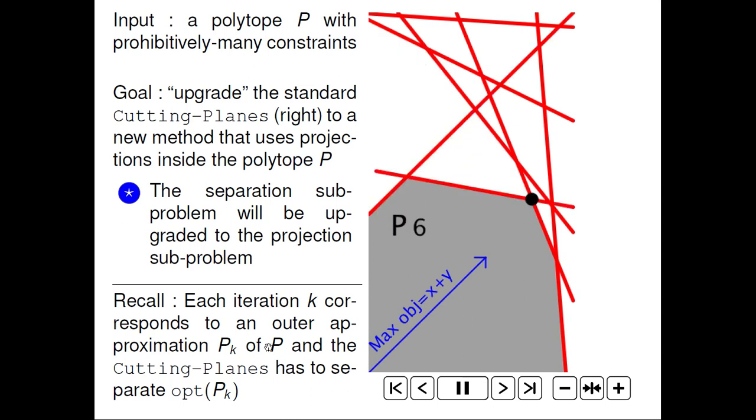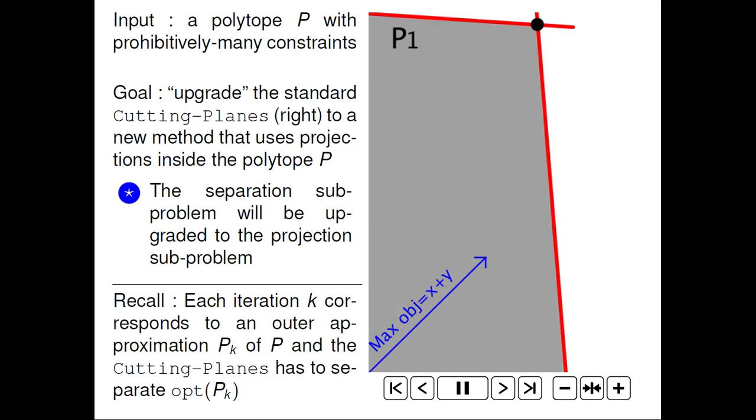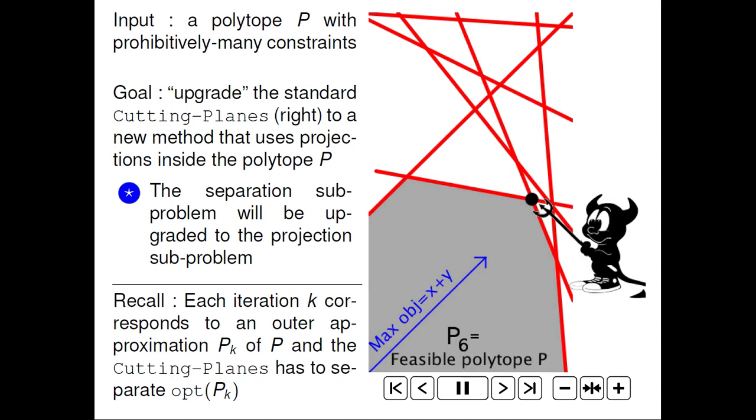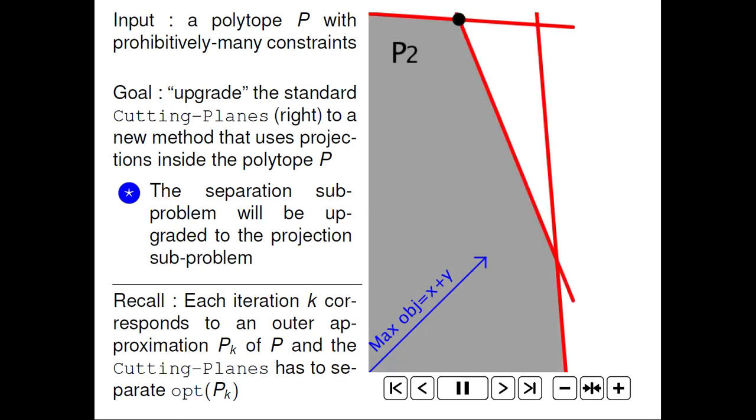In terms of notation, I will use the iteration counter k, which is always associated for both methods to an outer approximation P_k of P. And each iteration, for instance, the standard cutting-planes, has to separate the optimum value of P_k.